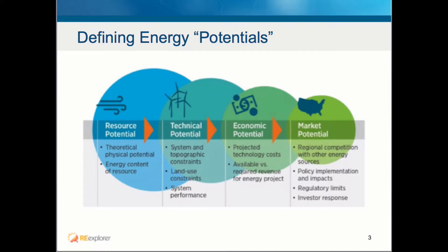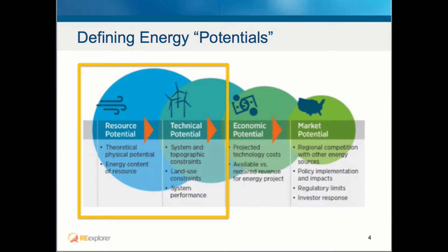When talking about potential energy, we need to distinguish between different kinds of potential. First, we have resource potential, which is the theoretical physical potential. Then we have technical potential, which factors in system and topographic constraints, land use constraints, and system performance. Economic potential adds projected technology costs, while market potential factors in regional competition with other energy sources, policy, regulations, and investor response. In the RE Data Explorer, we generally only deal with resource and technical potential.